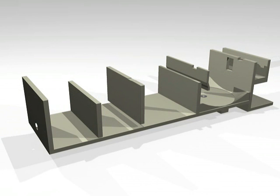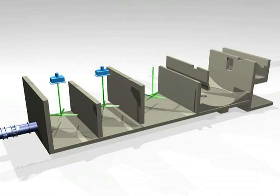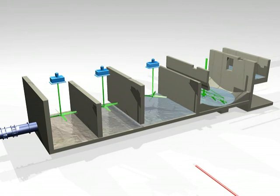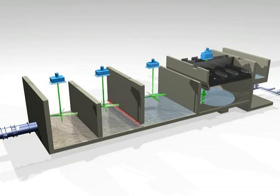Actiflow consists of three flocculation basins followed by a lamella settler. Equipment in the flocculation basins includes agitators with an axial mixing pattern. The settling tank includes a sludge scraper, lamella, and water collection troughs.